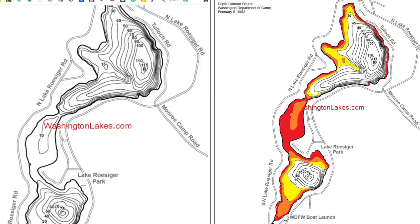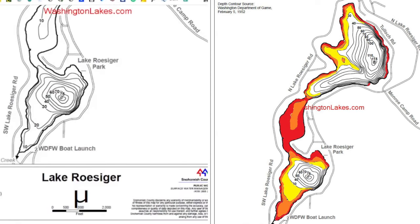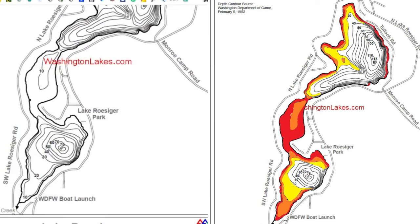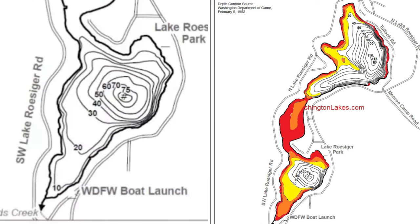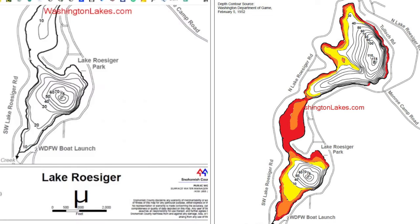Let's look at some of these topo maps — Lake Rossinger in Snohomish County, where we just had a tournament. This lake is comprised of three separate basins. Basin one, where the boat launch is, has a maximum depth of about 75 feet. Fish in this lower basin have access to just about everything they need: shallow water to spawn, cover along the shorelines, and deep enough water to stay comfortable in winter.